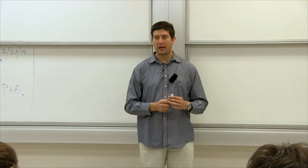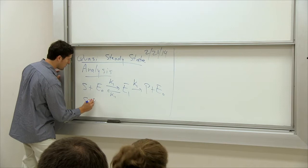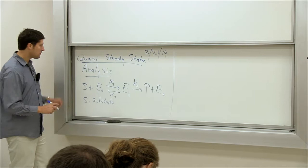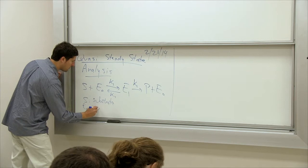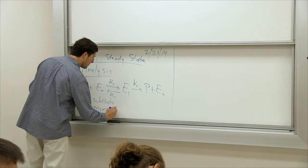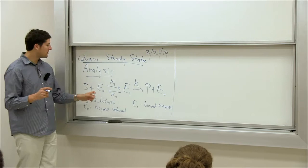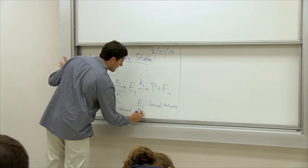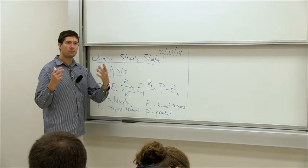Remember, we're talking about the Michaelis-Menten model of enzyme reactions. S is the substrate — in other words, the thing you're trying to change, the food you're trying to transport or whatever you want to modify. E0 is the enzyme in unbound form. E1 is the bound enzyme, meaning the enzyme bound to a substrate, so it's really a complex of two molecules, and P is the product — the final transported food or modified molecule.